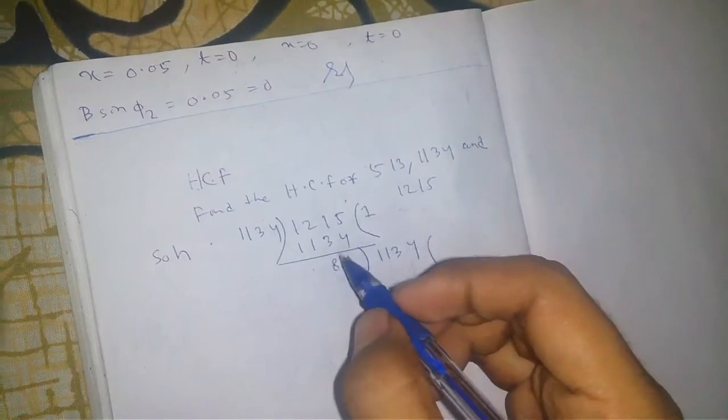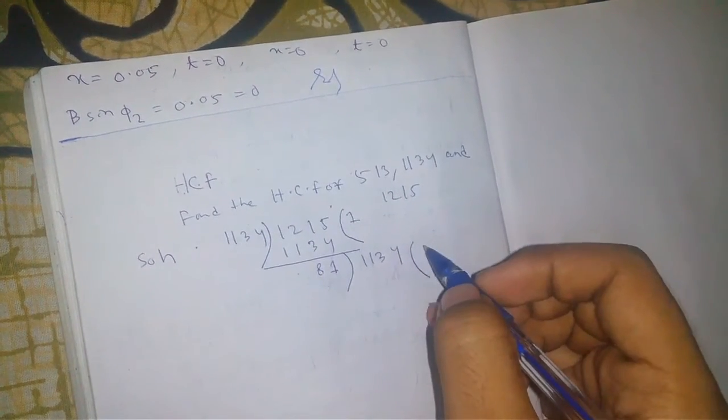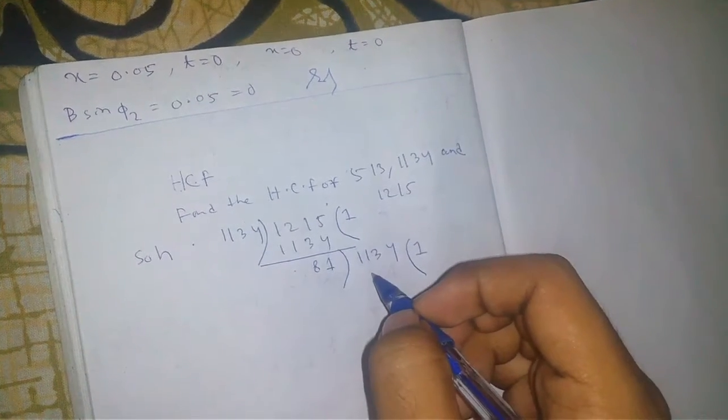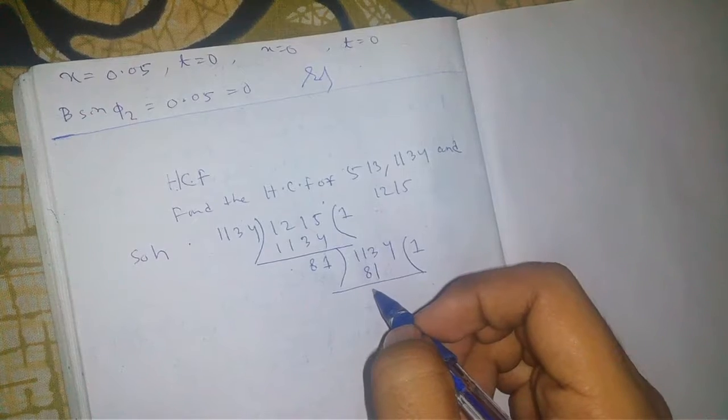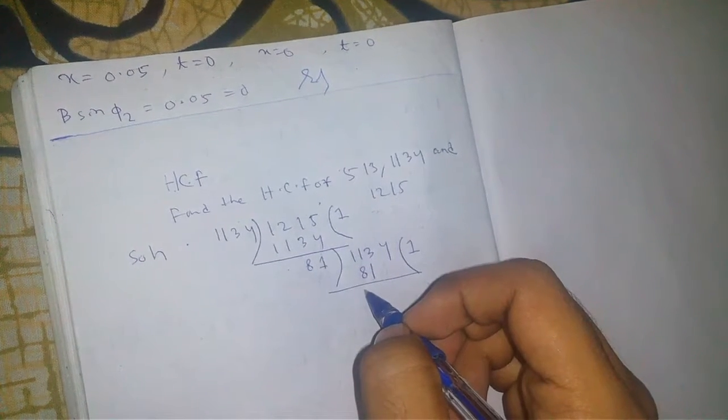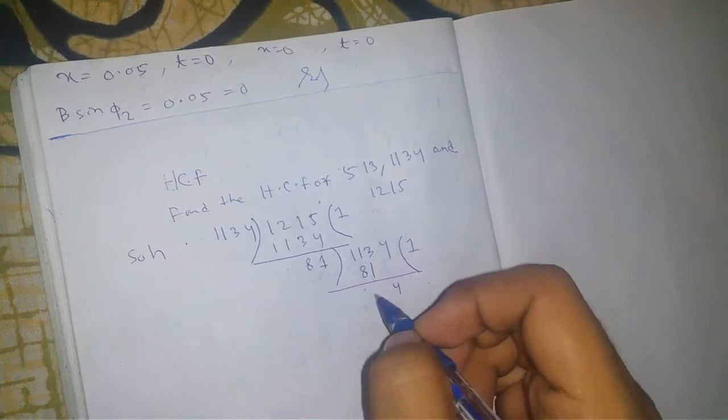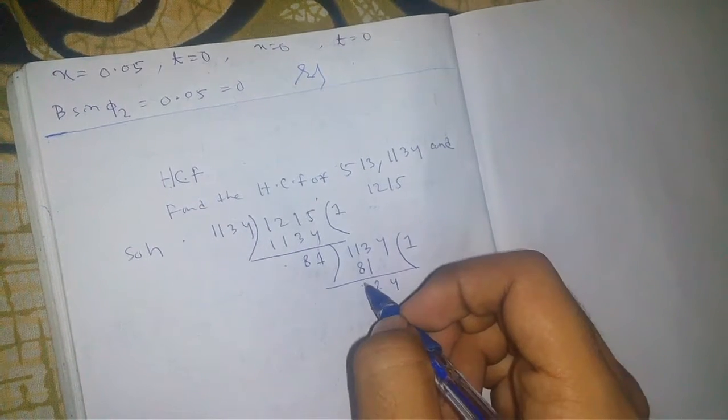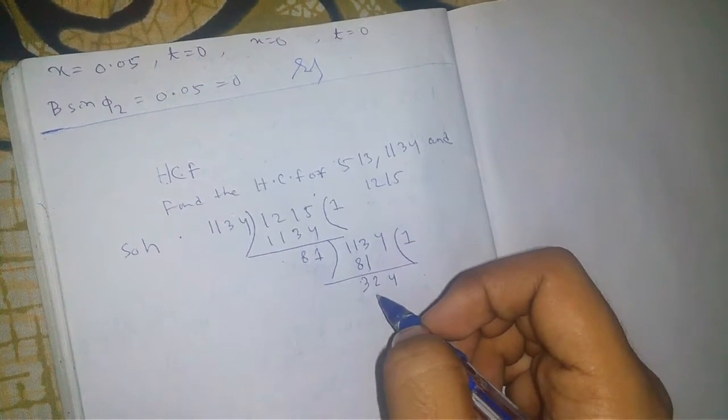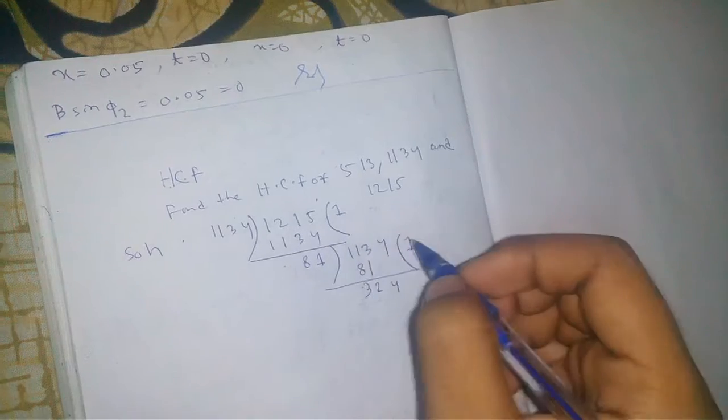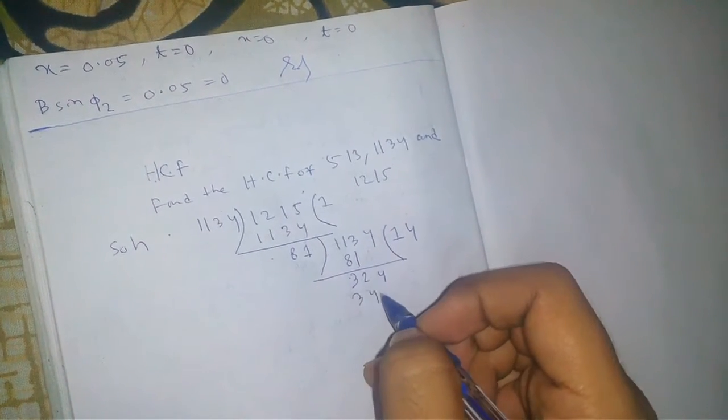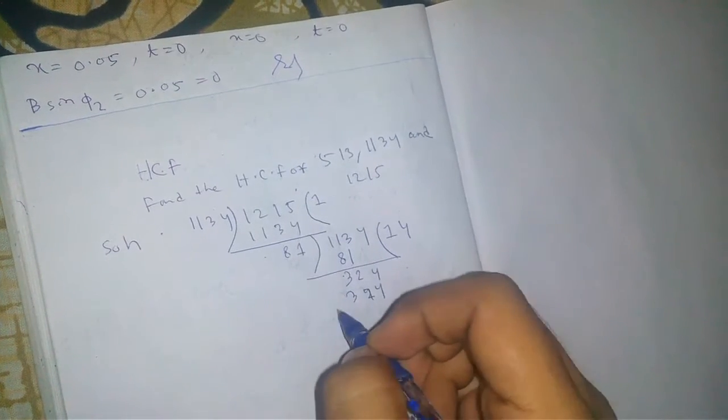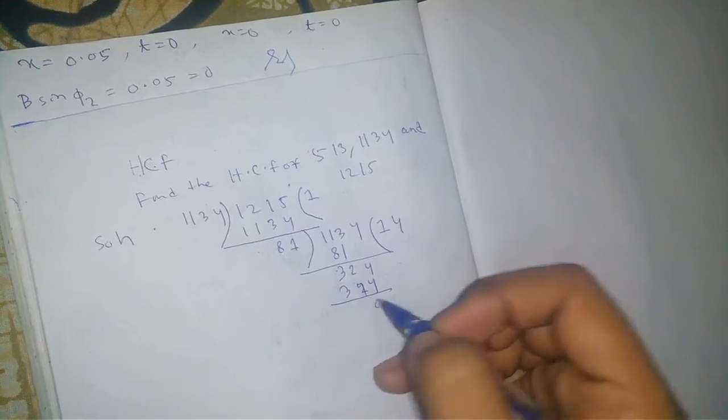And 81 into 1 equals 81. Remainder... 324. 81 into 4 equals 324. The remainder is 0.